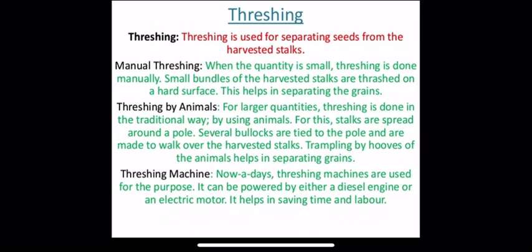The second type is threshing by animals. For large quantities, threshing is done in the traditional way by using animals. Stalks are spread around a pole, and several bullocks are tied to the pole and made to walk over the harvested stalks. Trampling by the hooves of the animals helps in separating the grains from the stalks.